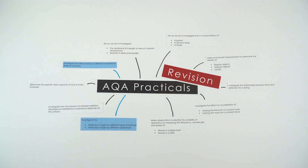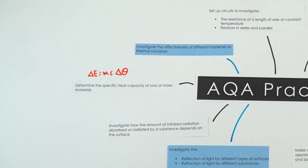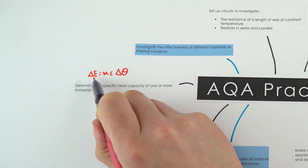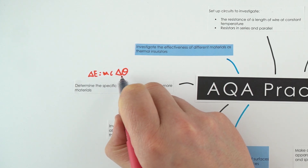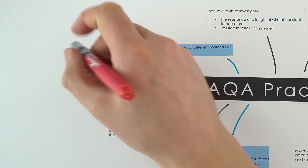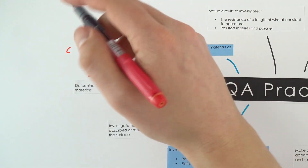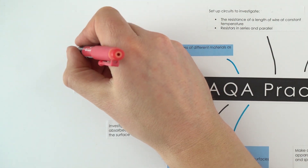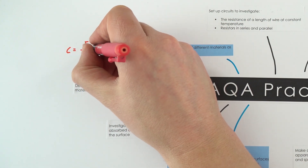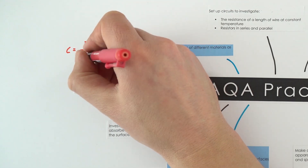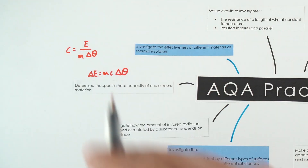Let's begin by looking at specific heat capacity. This is the equation linking the change in thermal energy with the mass of something, the specific heat capacity, and its change in temperature. To find the specific heat capacity, we need to know the energy supplied to something, how heavy it is, and its change in temperature.